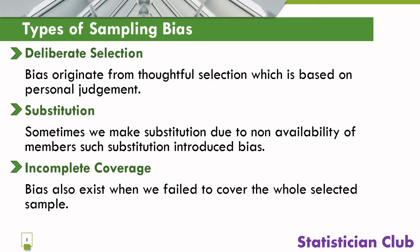Incomplete coverage: bias also exists when we fail to cover the whole selected sample. For example, in the case of questionnaires, when you want to collect data through mail questionnaires and some respondents did not reply, bias will exist.